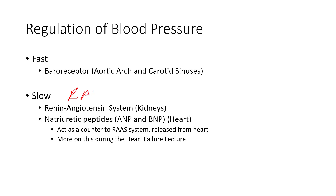We also have slow-adapting systems like the RAAS — renin-angiotensin-aldosterone system, sometimes written R-A-A-S — which is mediated through the kidneys. Both the baroreceptor system and the RAAS are primary negative feedback loops to keep blood pressure within the homeostatic set range. We also have natriuretic peptides, which counteract the RAAS — released by the heart in the atria or ventricles in response to stretch, doing essentially the opposite of angiotensin II. We'll cover those more in the heart failure lecture.